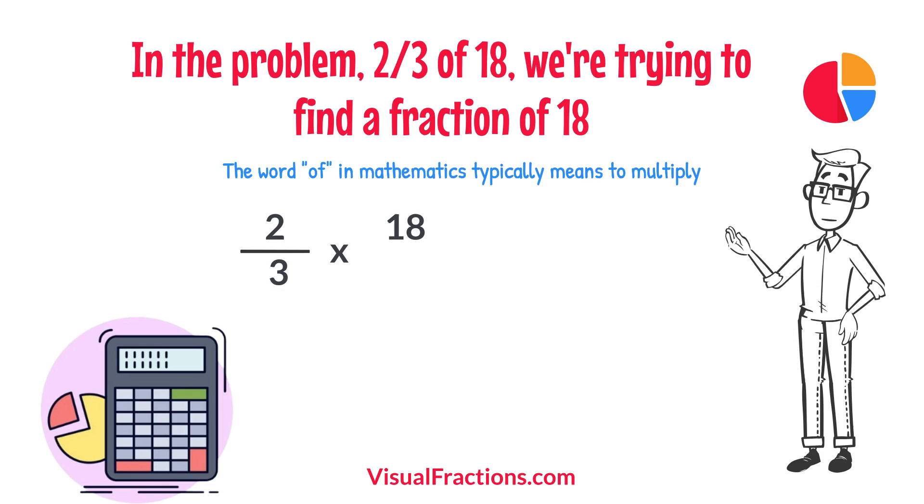To simplify the calculation, we first convert our whole number into fraction form, writing 18 as 18 over 1. This transformation makes it easier to work with our numbers as fractions.